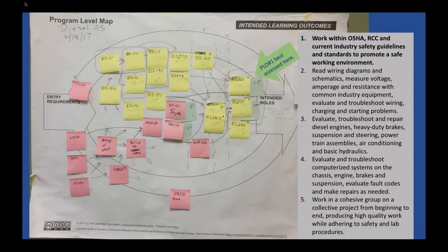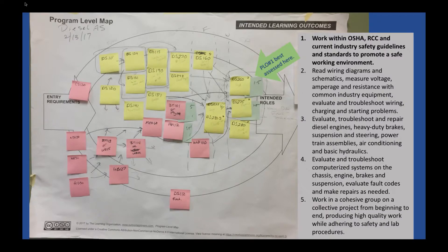The question they're asking, specifically for program learning outcome one — which is: work within OSHA, RCC, and current industry safety guidelines and standards to promote a safe working environment — is: where is that best assessed? They had it in three different places in three different courses, but they concluded it's best assessed in DS260, which is in the last term of the program. It's a hydraulic systems course.